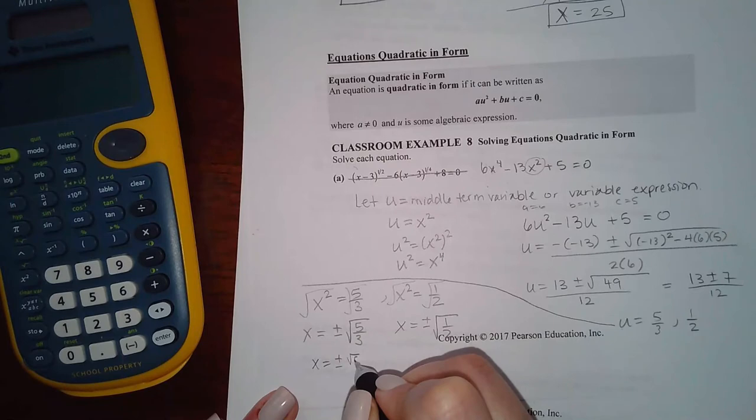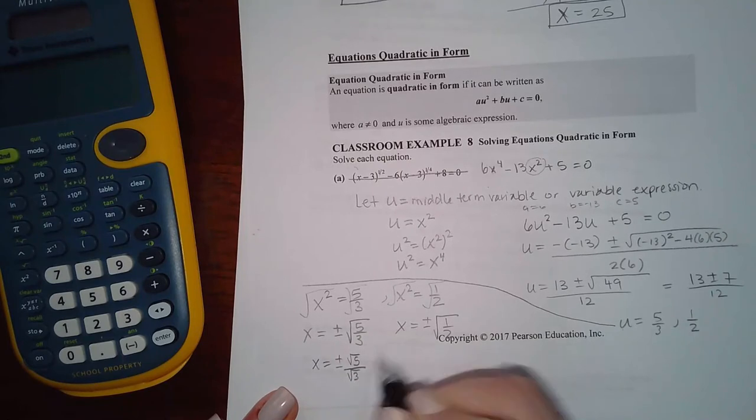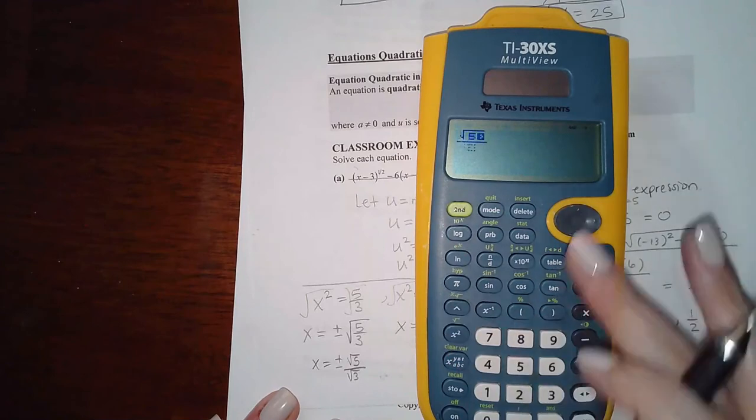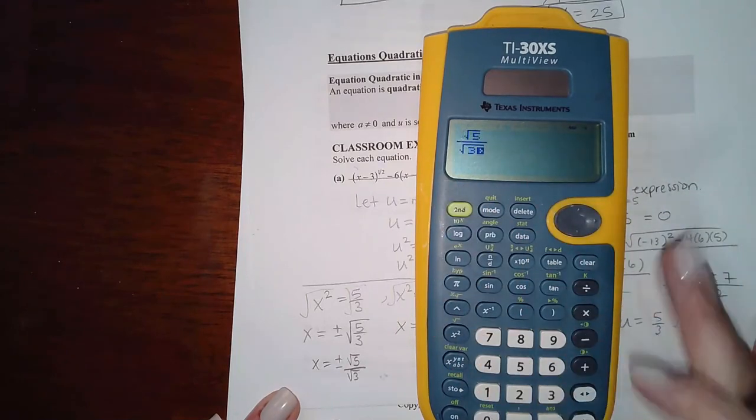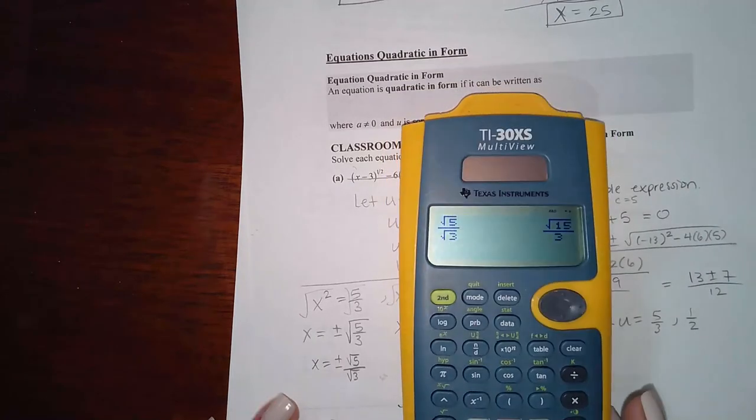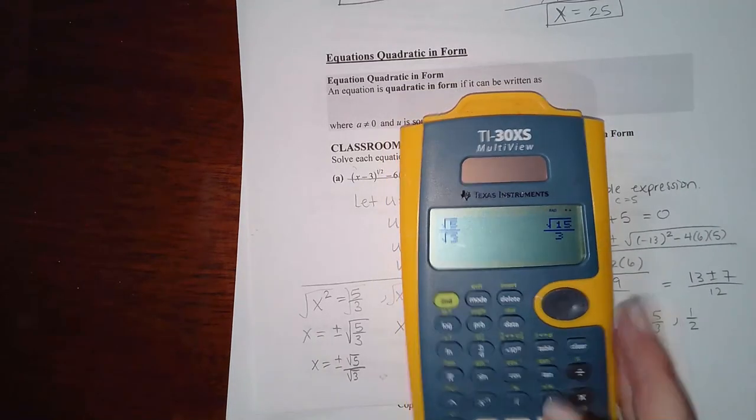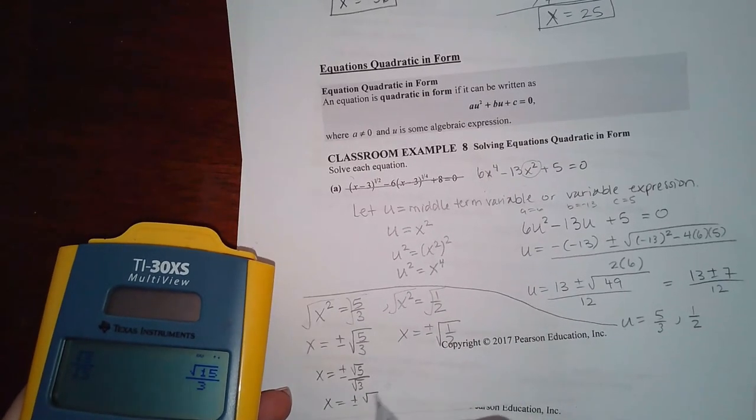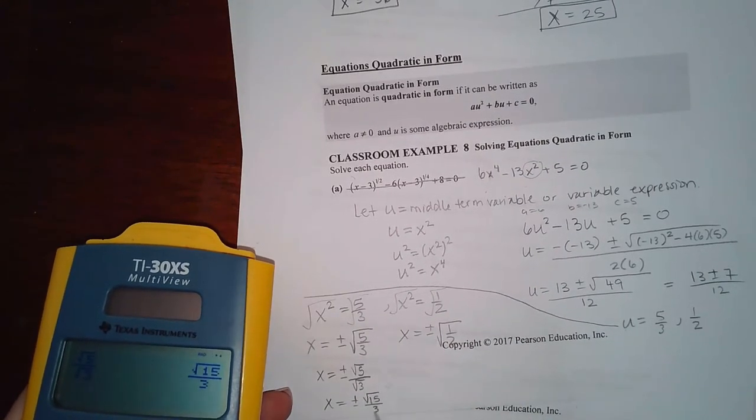So we take the square root of 5 over the square root of 3. Maybe the calculator will do it then. Let me see. Square root of 5 over the square root of 3. Ah, yes. It rationalizes it as long as you enter it separately. So I do get x equals plus or minus the square root of 15 over 3.